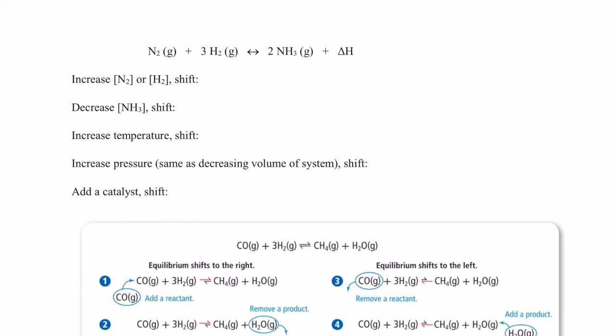So, let's just take a look at the example at the top of the next page. We have nitrogen gas and hydrogen gas reacting to form ammonia. And this is an exothermic reaction. Heat is produced in this reaction.